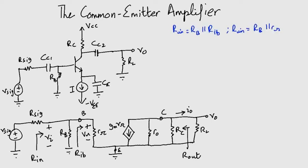RIN is equal to RB parallel with RIB, and since RIB is only RPI, RIN comes out to be RB parallel with RPI. Now usually RB is much larger than RPI. This denotes that RIN equals RPI. This is a very small input resistance. Anyhow, let's move ahead.